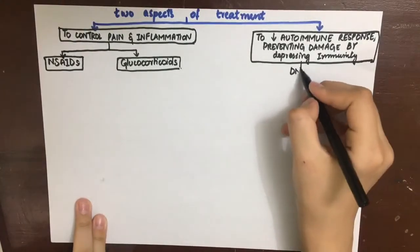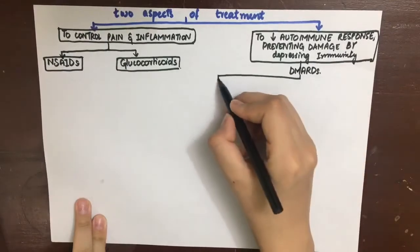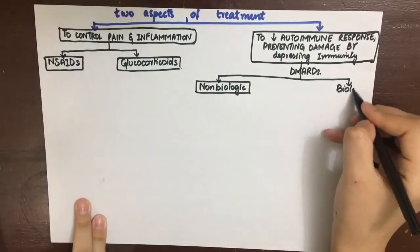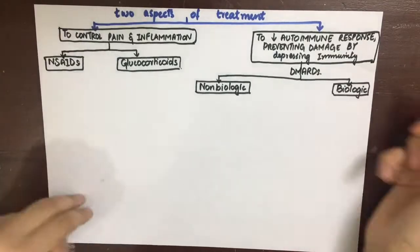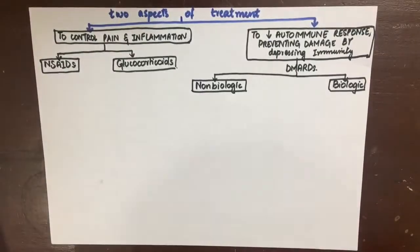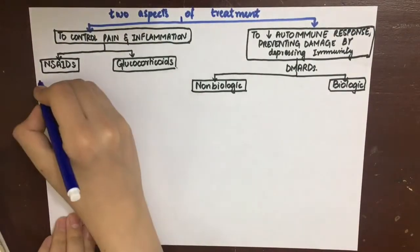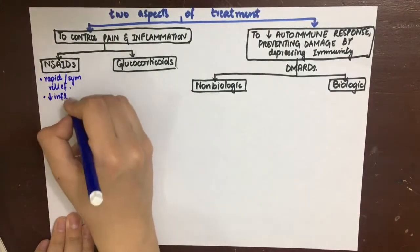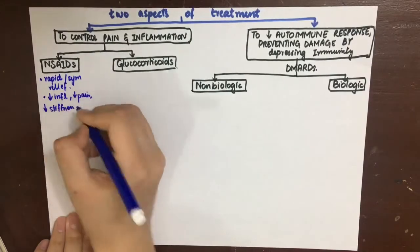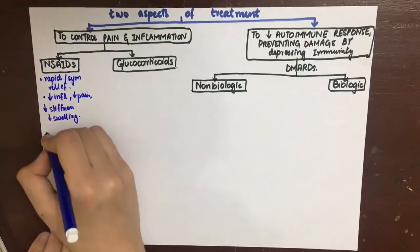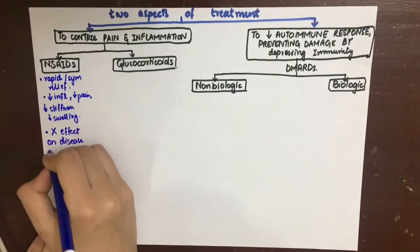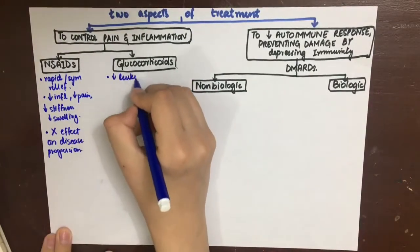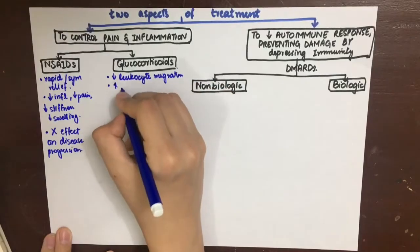DMARDs are further classified as non-biologic and biologic. Non-biologics are not derived from biological sources, while biologics are derived from biological sources. NSAIDs are used for rapid symptomatic relief by decreasing inflammation and pain; they decrease stiffness and swelling in the joints but do not have any effect on the progression of the disease.